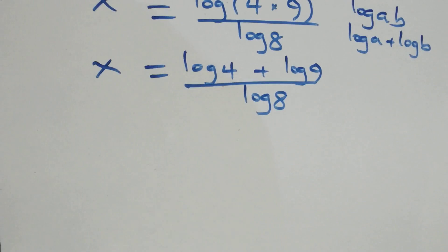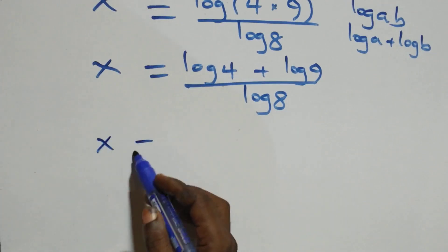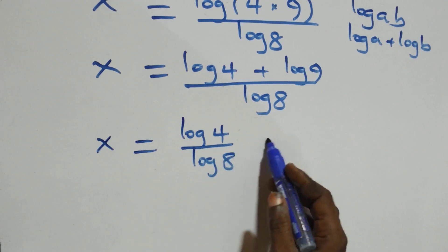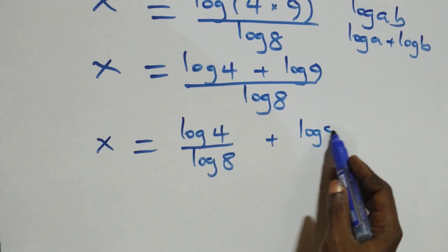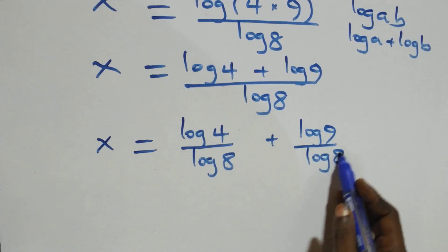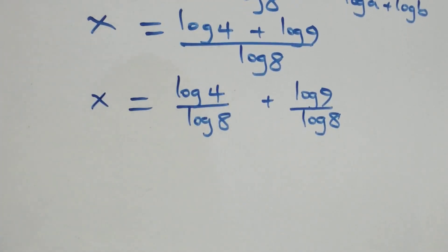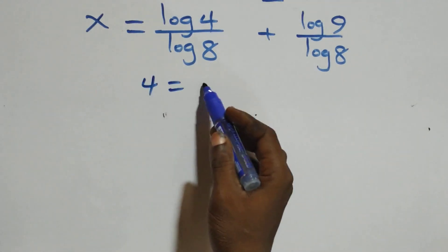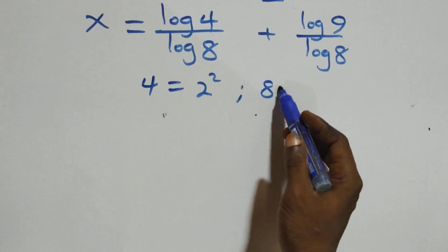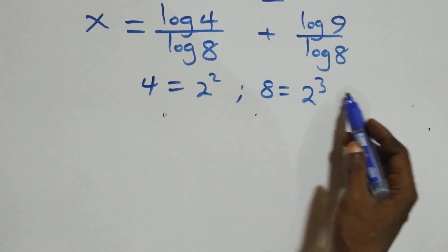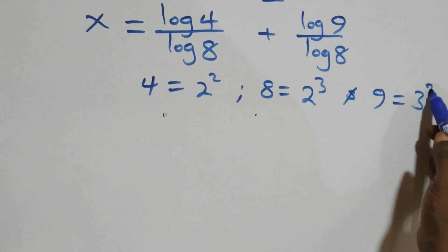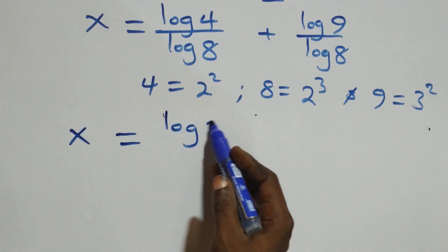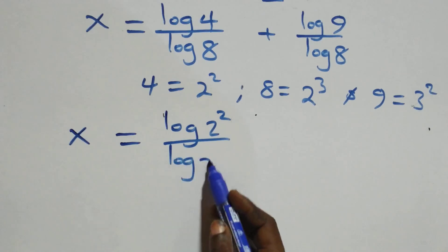Then here we separate this into two fractions and we have x equals to log 4 over log 8, plus log 9 over log 8. Also, we can write 4 as 2 times 2, which is 2 squared; 8 as 2 times 2 times 2, which is 2 cubed; and 9 as 3 times 3, which is 3 squared.